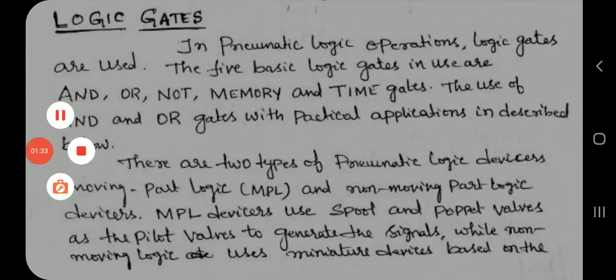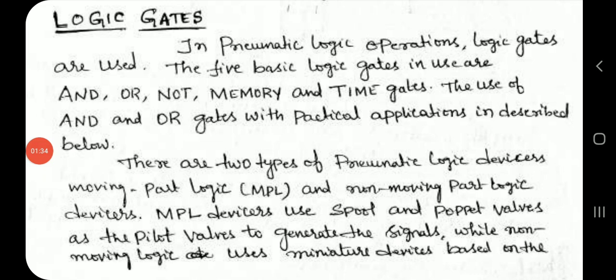In pneumatic logic operations, logic gates are used. The five basic logic gates in use are AND, OR, NOT, MEMORY, and TIME gates.